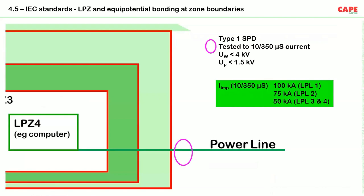For Type 1 SPDs at the building entrance: in LPL1, expected impulse current is 100 kA (50% of 200 kA); in LPL2, it is 75 kA (50% of 150 kA); in LPL3 and LPL4, it is 50 kA (50% of 100 kA). In each case, 50% of the lightning energy dissipates into the ground and the remaining 50% returns into the building through power lines via SPDs.